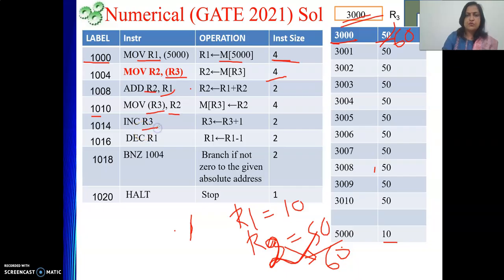Then what we are doing? Increment R3, exactly similar to previous problem. So R3 is now at 3001. Then decrement R1. So R1 will become 9.